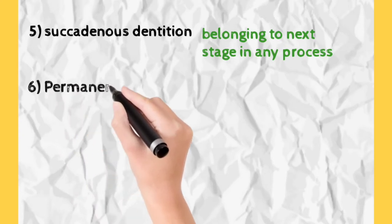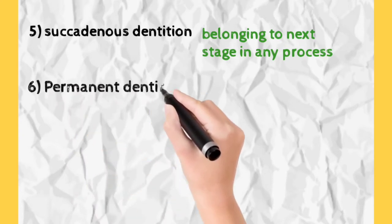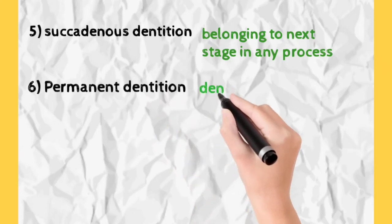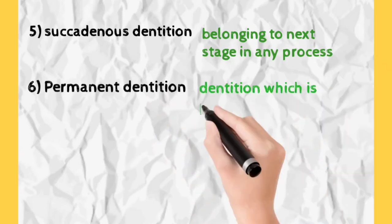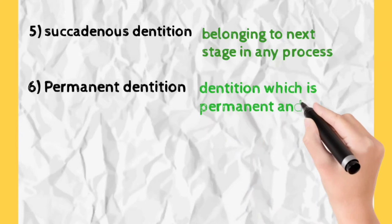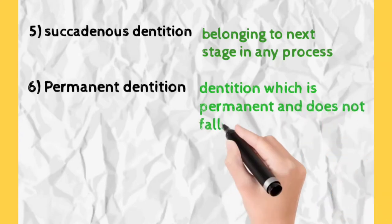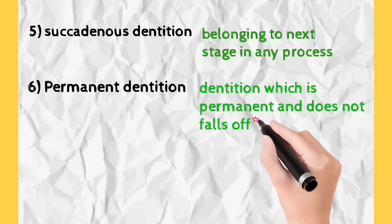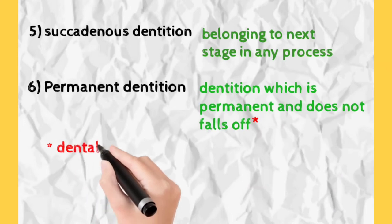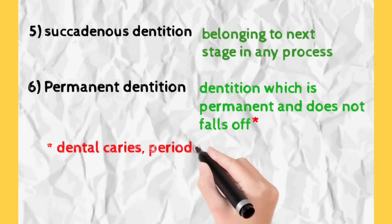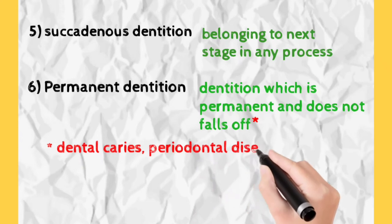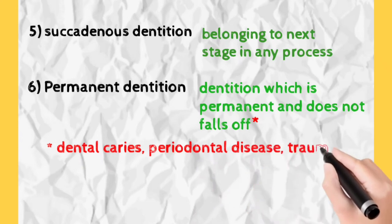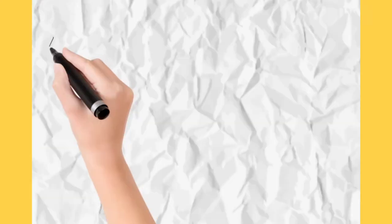Next term is permanent dentition, which do not fall off and remain throughout the life. There is a condition here denoted by red star that they don't fall off, but in some conditions like periodontal disease, dental caries, or trauma, teeth may unusually fall off.